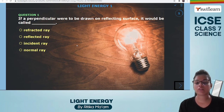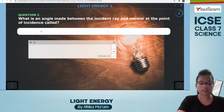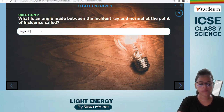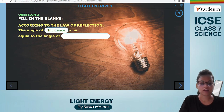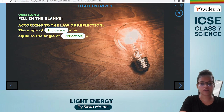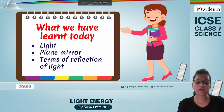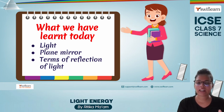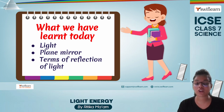Activity: if a perpendicular were drawn on a reflecting surface, it would be called the normal. The angle made between the incident ray and the normal at the point of incidence is the angle of incidence. According to the law of reflection, the angle of incidence is equal to the angle of reflection. Today we learned about light, plane mirror, and terms of reflection of light — it was a very easy and quick chapter. I will be bringing more parts in which we will learn more about light energy. Keep learning and book your free trial class!